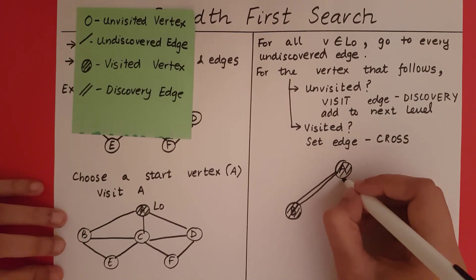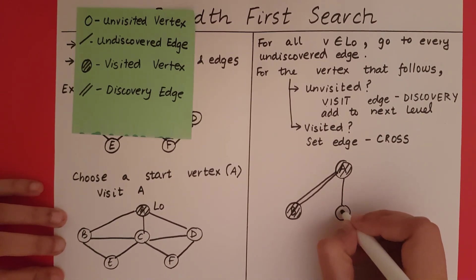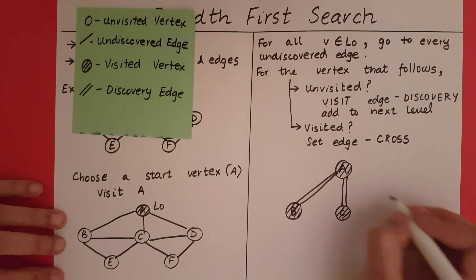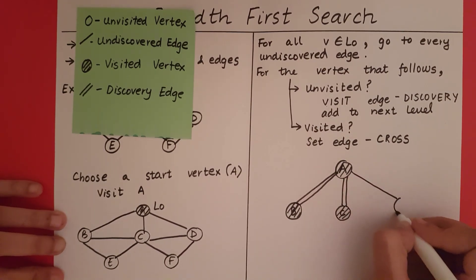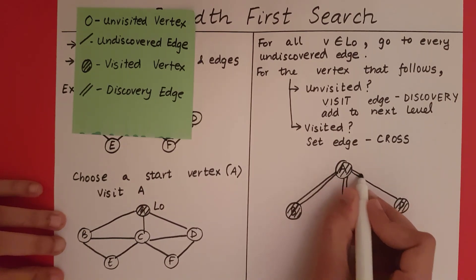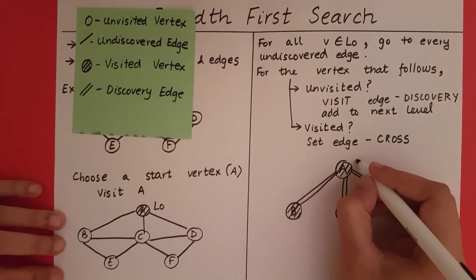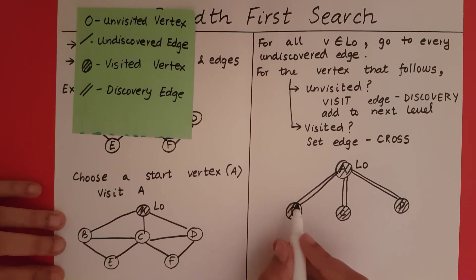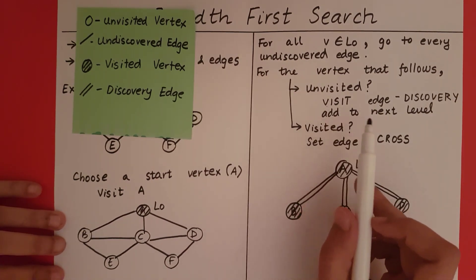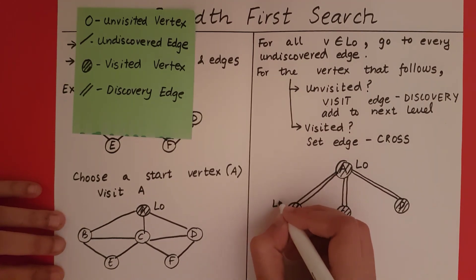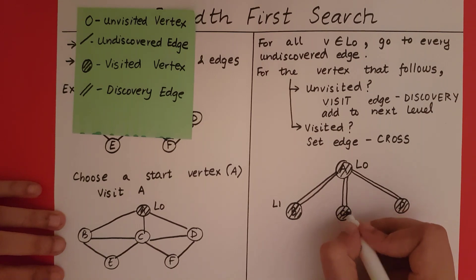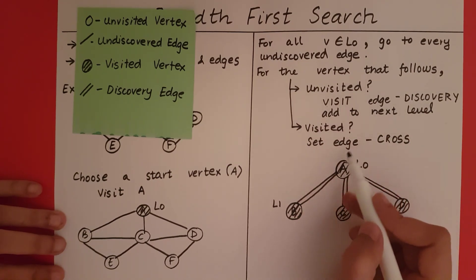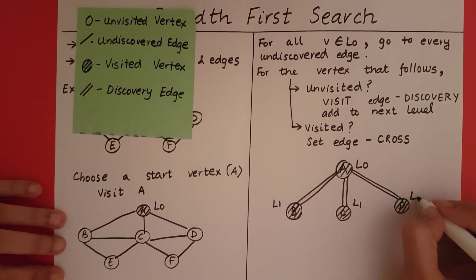Now I go to the next undiscovered edge from A, which leads to C. C is unvisited, so I visit it and make that edge a discovery edge. I then go to the next undiscovered edge, which leads to D. I visit D and that edge also becomes a discovery edge. Since A was at level 0, B, C, and D are all added to the next level — level 1.